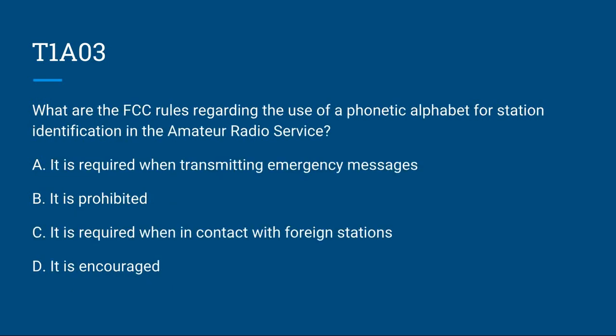T1A03: What are the FCC rules regarding the use of a phonetic alphabet for station identification in the amateur radio service? A, it is required when transmitting emergency messages; B, it is prohibited; C, it is required when in contact with foreign stations; or D, it is encouraged. The correct answer is D, it is encouraged.